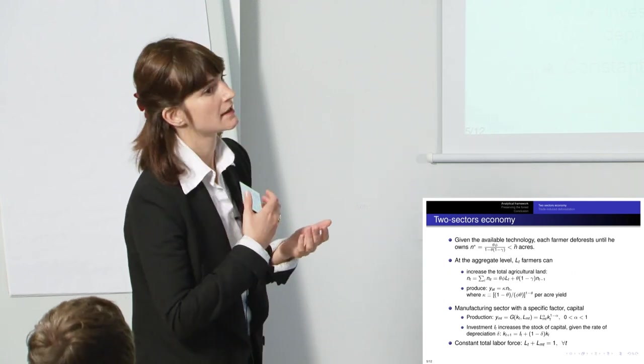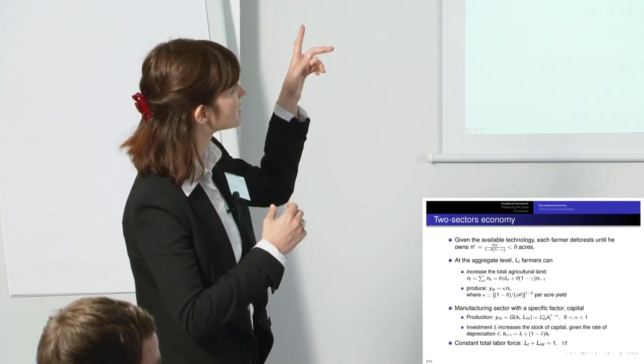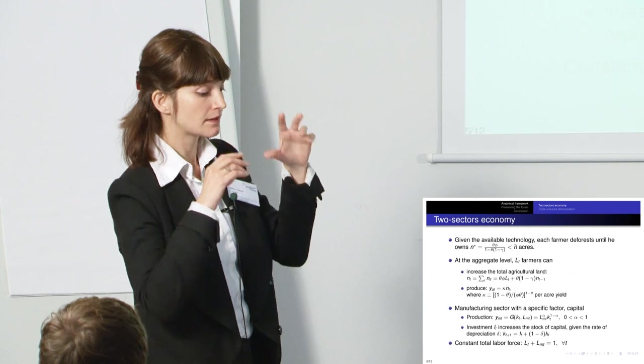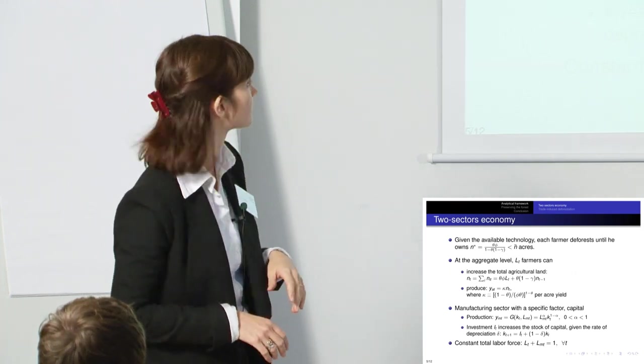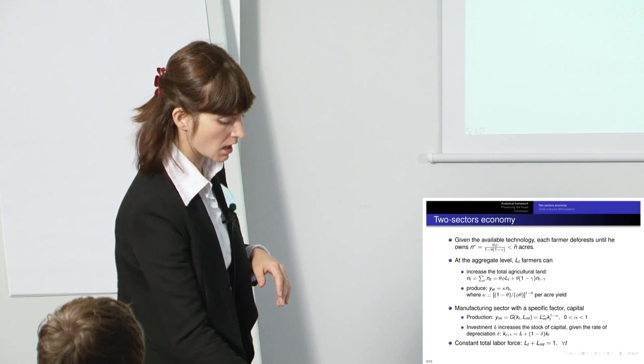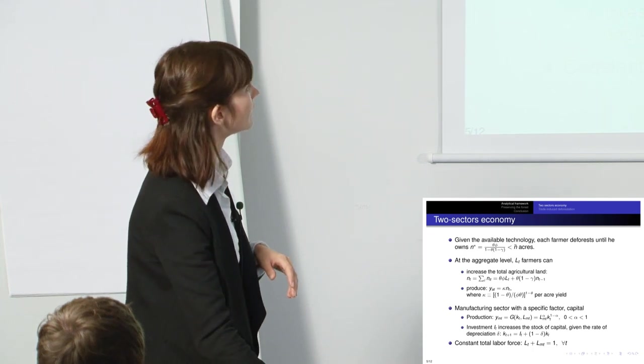So each farmer can deforest basically until they reach this kind of optimal size for an agricultural lot, N star.